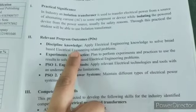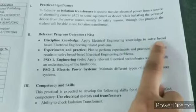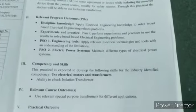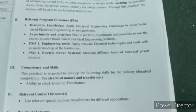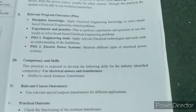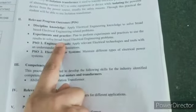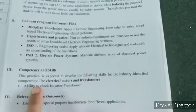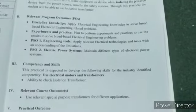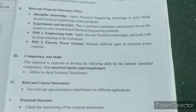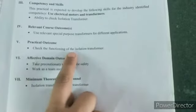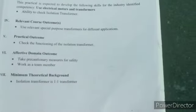Here your program outcome is being satisfied — discipline knowledge: apply electrical engineering knowledge to solve broad-based electrical engineering related problems. You are getting basic electrical knowledge here. Then experiment and practice — you are going to perform an experiment and observe the function of isolation transformer, so your experiment and practice P.O. is being satisfied. Then we see competency and skill — ability to check the isolation transformer. From this you understand what the isolation transformer's ability is and how its function is checked. Your practical outcome — check the functioning of isolation transformer — is also being satisfied.